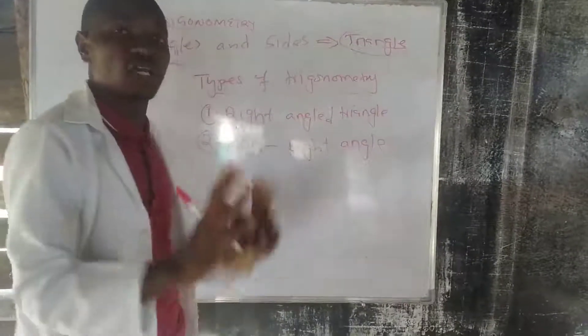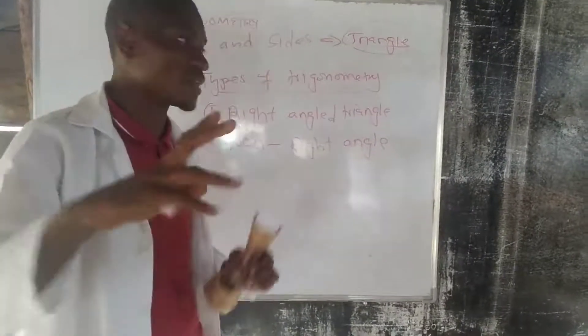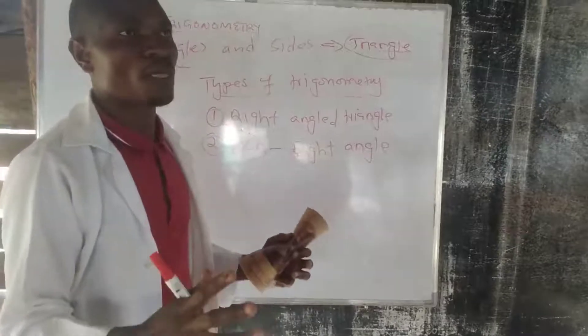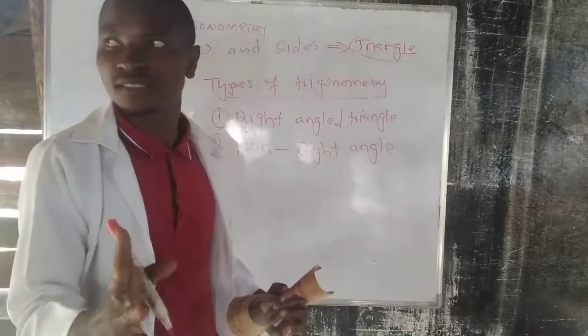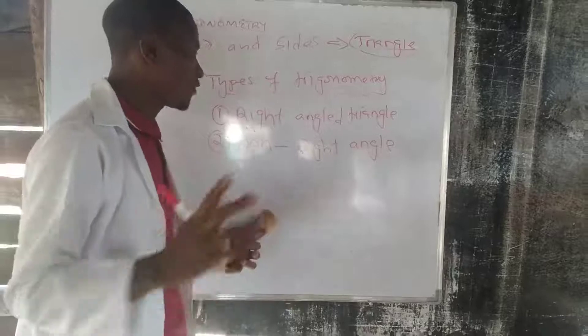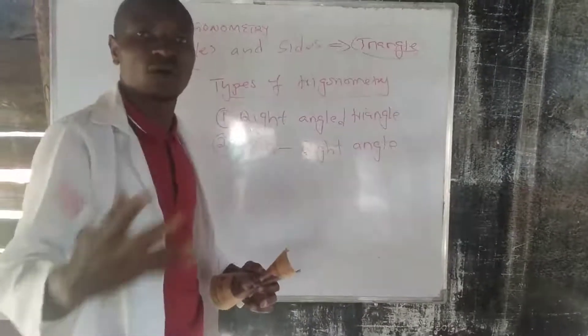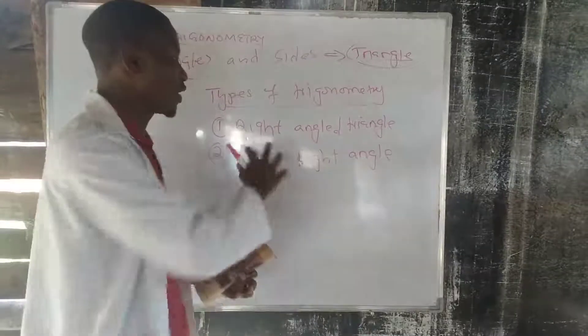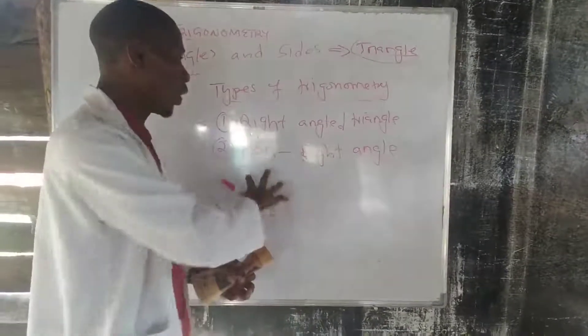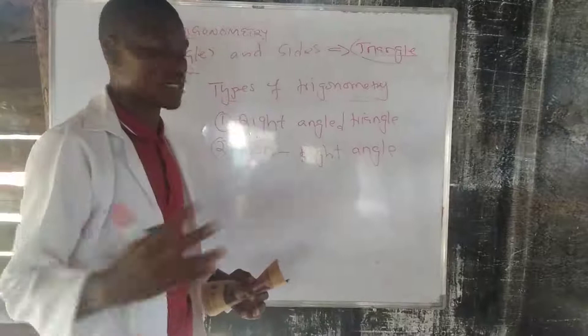So, in this case, you'll be dealing with a triangle whose angle is not 90 degrees. Therefore, you have got to differentiate between which triangle are you dealing with. For instance, are you dealing with a right-angled triangle or the non-right-angled triangle?